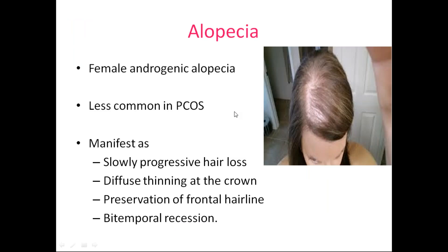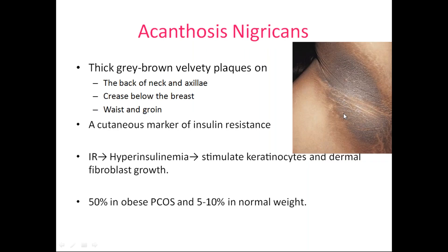Androgenic alopecia is less common in PCOS. It presents as slowly progressive hair loss with diffuse thinning of the crown hair, preservation of the frontal hairline, and bitemporal recession. Acanthosis nigricans is a cutaneous marker of insulin resistance, seen as gray-brown velvety patches in flexural areas — most common sites are the back of the neck, axilla, below the breast, waist, and groin regions.